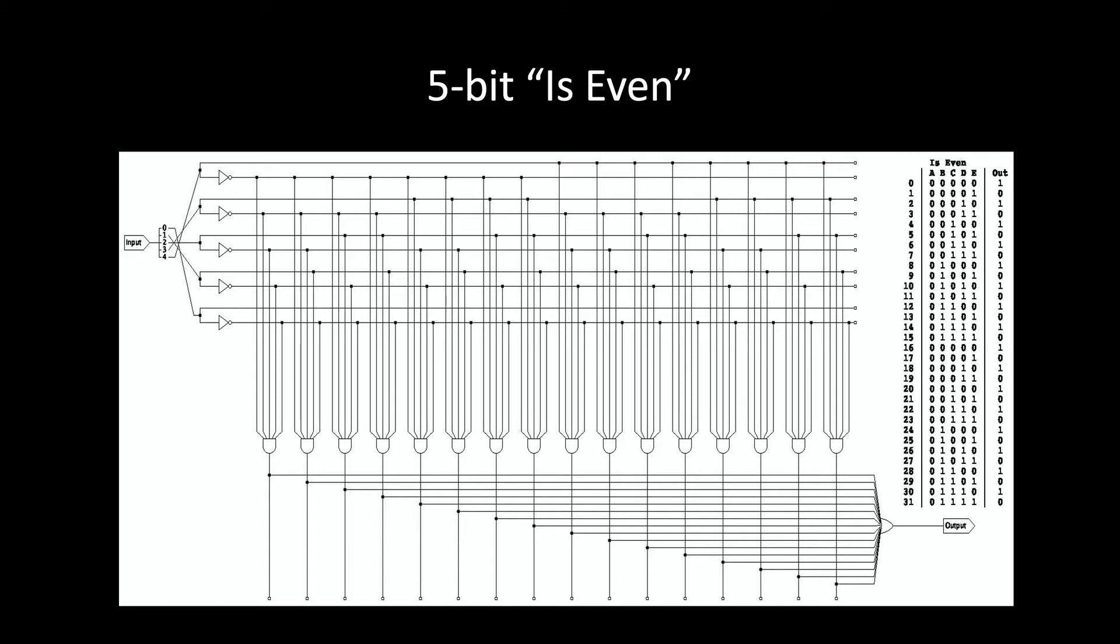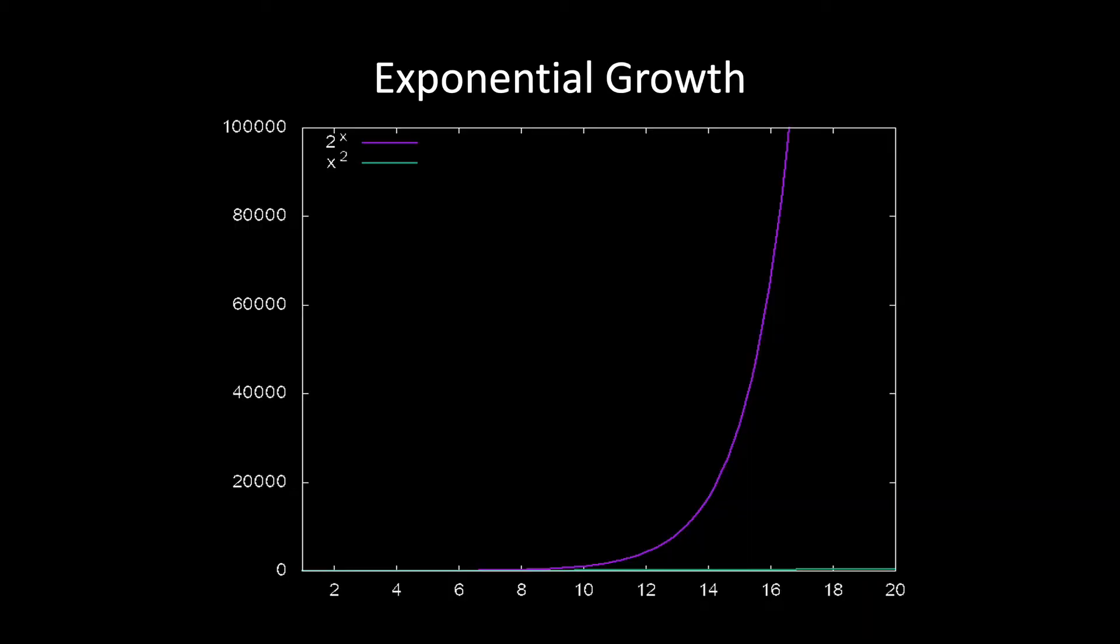Now, this pattern of doubling in size when the input grows by just one bit is a classic example of what we call exponential growth. Notice how much faster the graph of 2 to the x grows than the graph of x squared. x only has to be as large as 18 before the purple line is off the top of the chart, whereas you can barely see the green x squared graph just above the bottom of the graph.